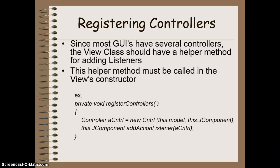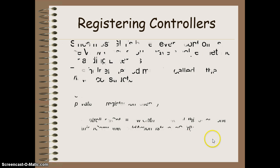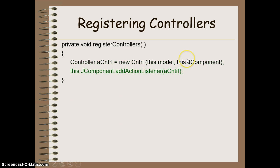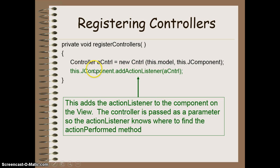Now since most GUIs have several controllers — because we're going to have several buttons and things that we want to have actions performed with — it makes it easier to have a helper method that is responsible for doing all the controllers for us, called the registerControllers method. This method is called when the view is constructed, after we've done a layout. We would then run the registerControllers method. We have two lines for each controller: one is we create an instance of the controller class where we provide the model and the component, and then we add the action listener to the component so that it is able to respond to an action that occurs.